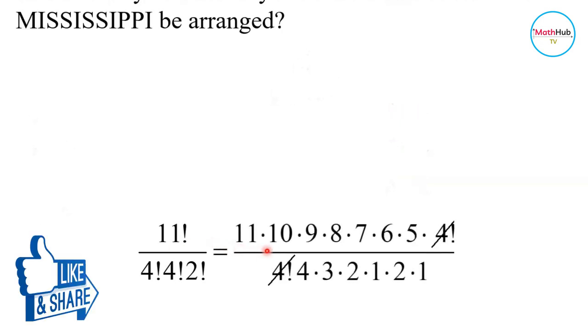Expanding this, so 11 factorial may be written as 11 times 10 times 9 times 8 times 7 times 6 times 5 times 4 factorial. We have 4 factorial in the denominator. Now this other 4 factorial may be written as 4 times 3 times 2 times 1. And the 2 factorial will be written as 2 times 1.